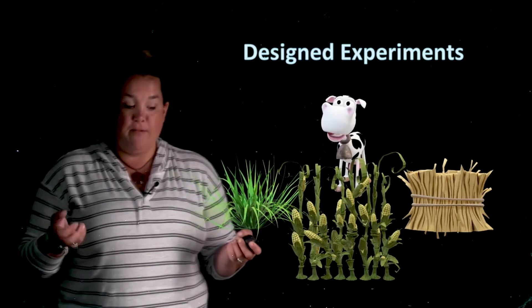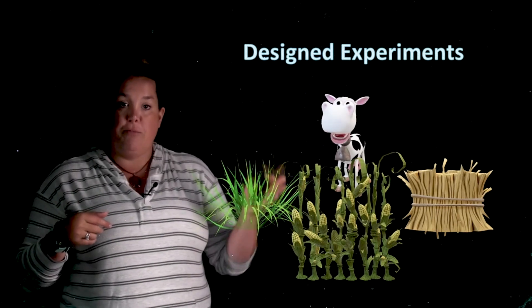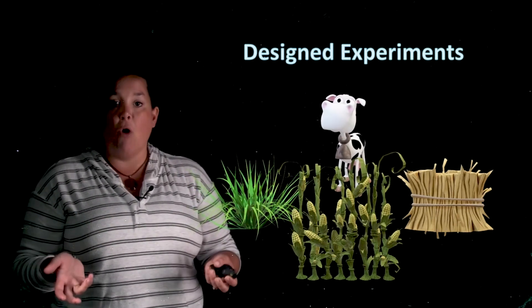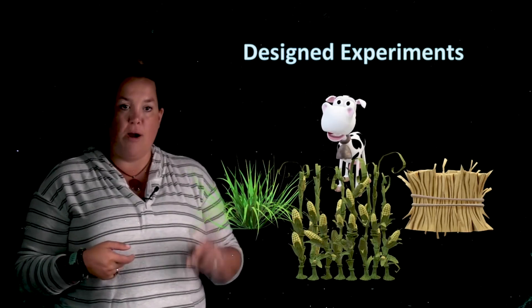Next thing we have is going to be what's our observational unit? Well, it would be a single cow. That's the smallest unit or individual or subject that we have. So single cow is our observational unit.